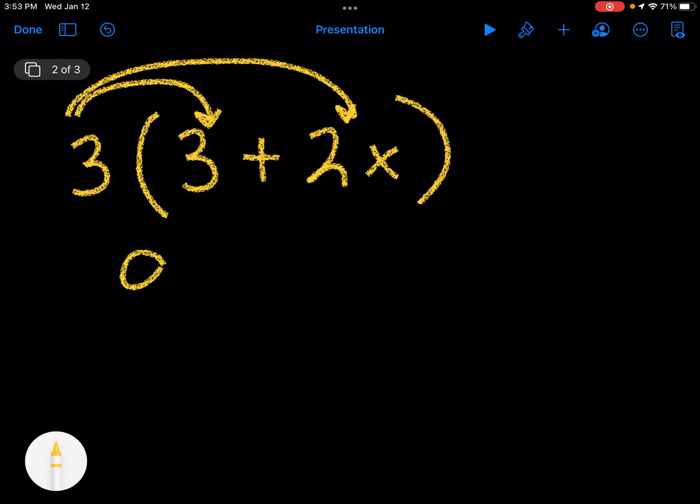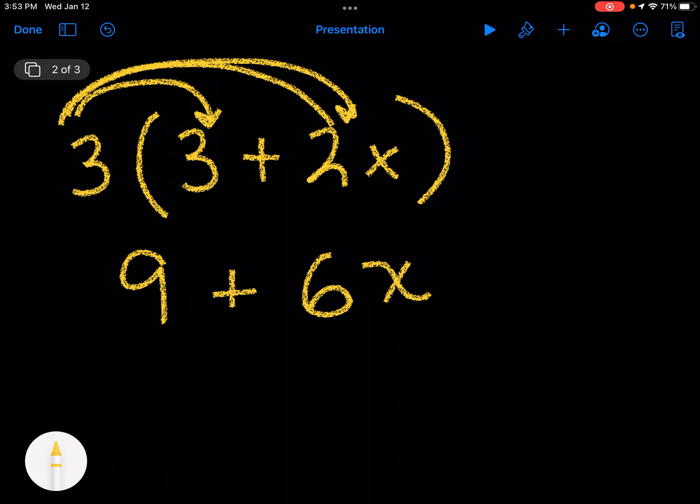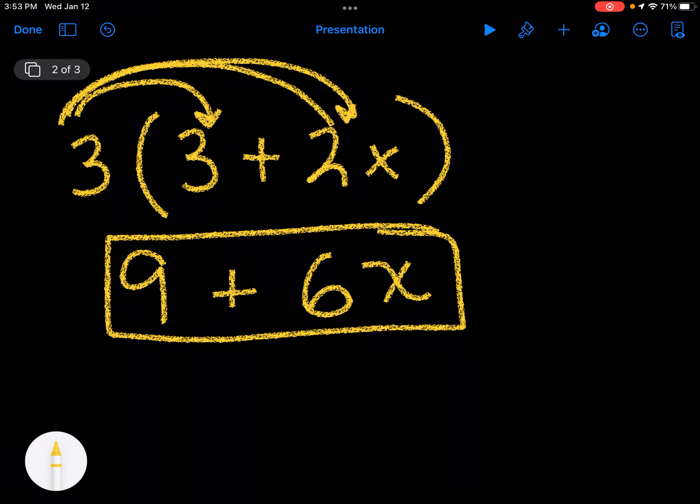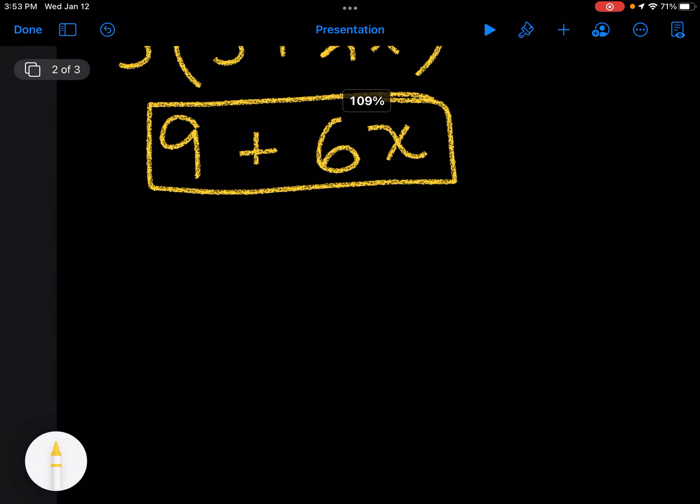So 3 times 3 is 9, and then 3 times 2 is 6, and I bring the x along for the ride. So I have 9 plus 6x, because 9 doesn't have an x on it, they are not like terms, so I stop there. I can't combine them. That's my equivalent expression.